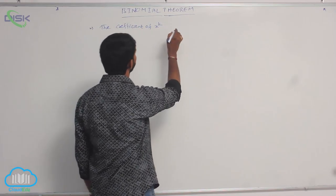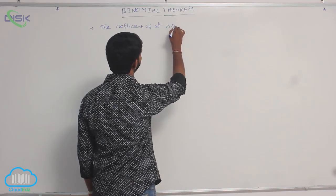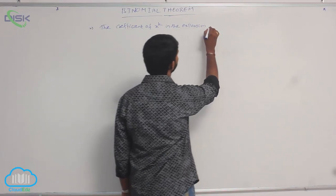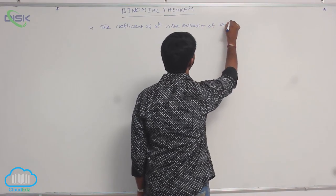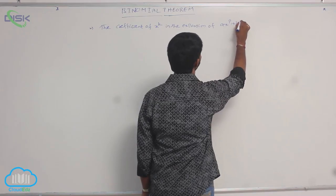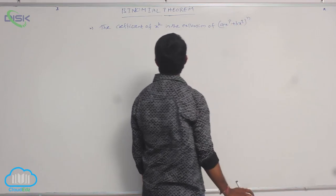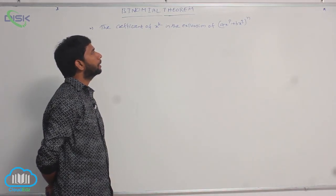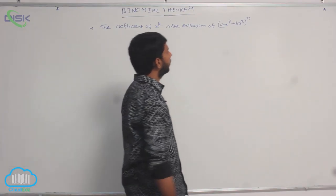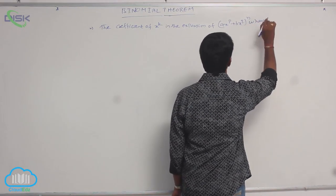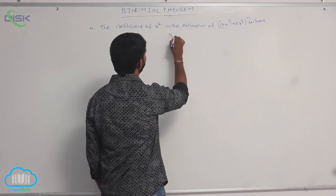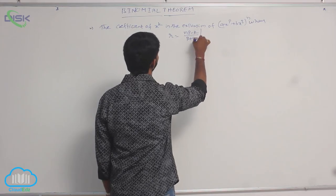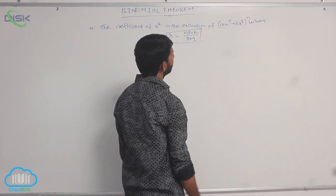The coefficient of x power k in the expansion of (a times x power p plus b times x power q) whole power n. When r is equal to np minus k, divided by p plus q.